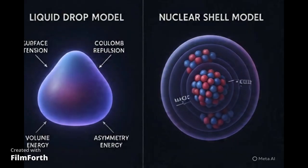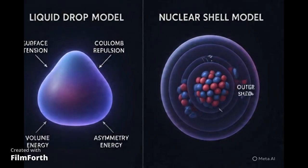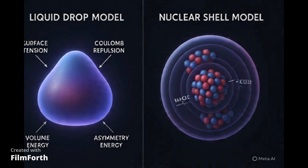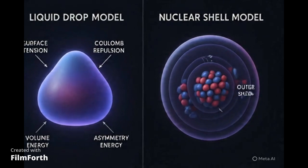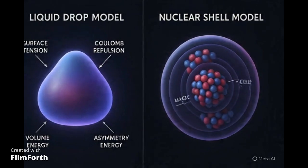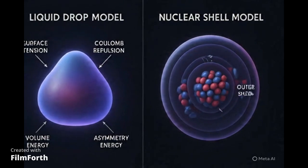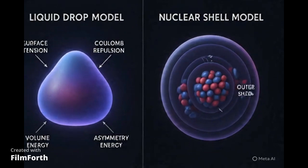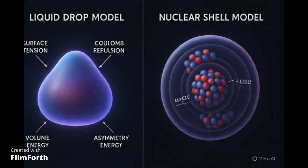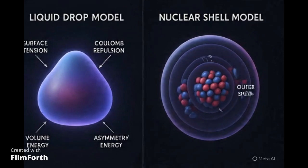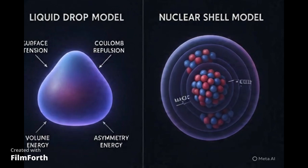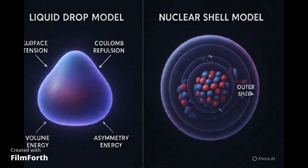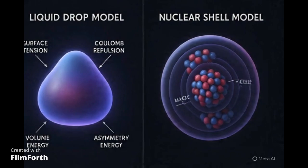To understand and predict these shapes, scientists use various theoretical models. The liquid drop model offers a more classical picture, imagining the nucleus as a droplet of fluid where surface tension favors a spherical shape, but other forces can cause it to deform. On the other hand, the nuclear shell model delves into the quantum mechanical world, considering the energy levels and arrangements of individual nucleons.